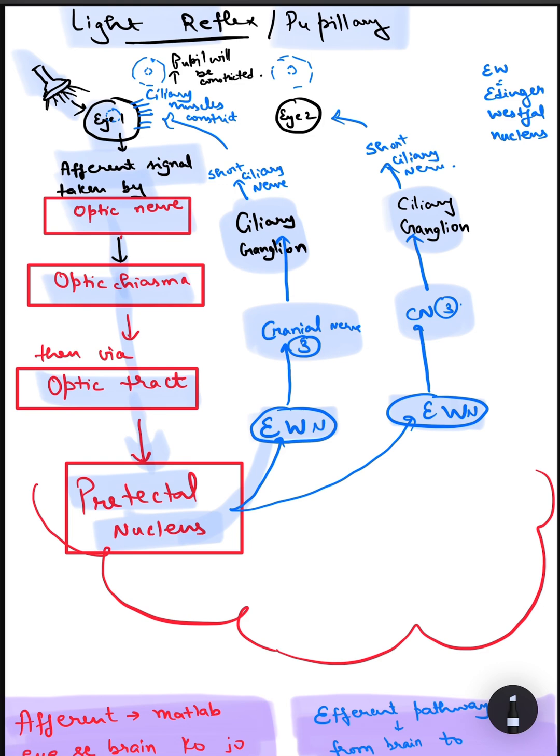Then from the ciliary ganglion, signals are carried by the short ciliary nerves to both eyes where they act on the ciliary muscles and cause constriction of the pupil.